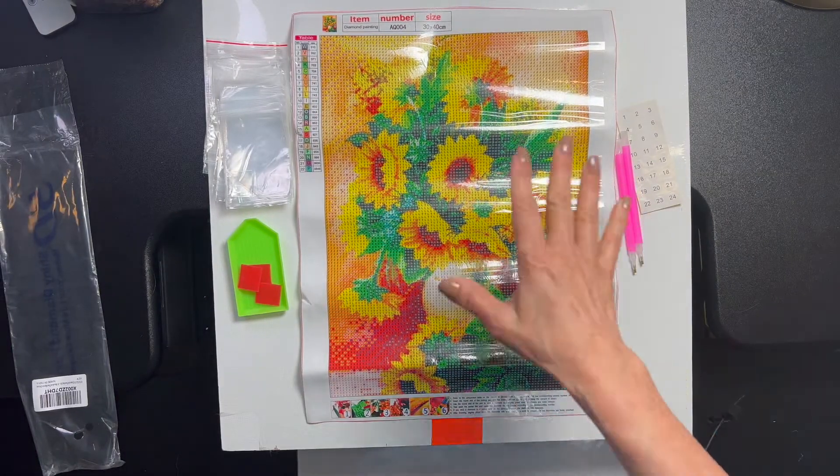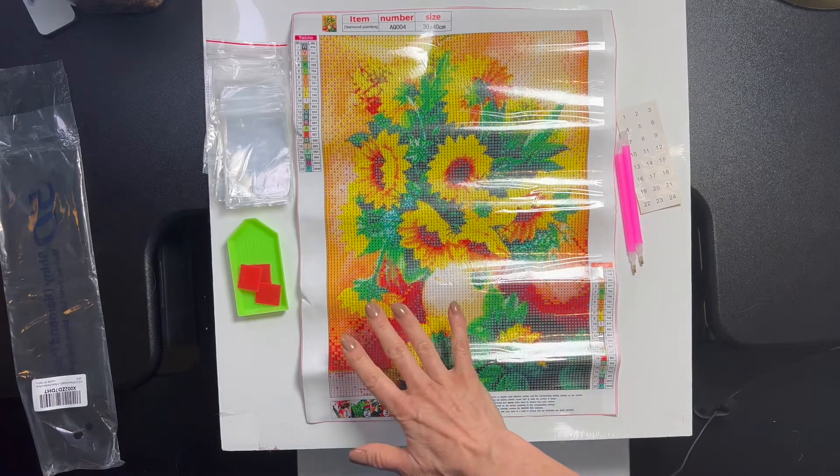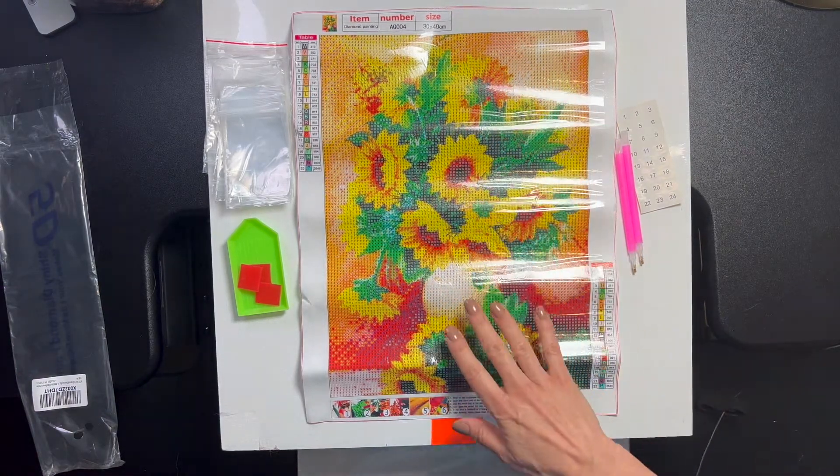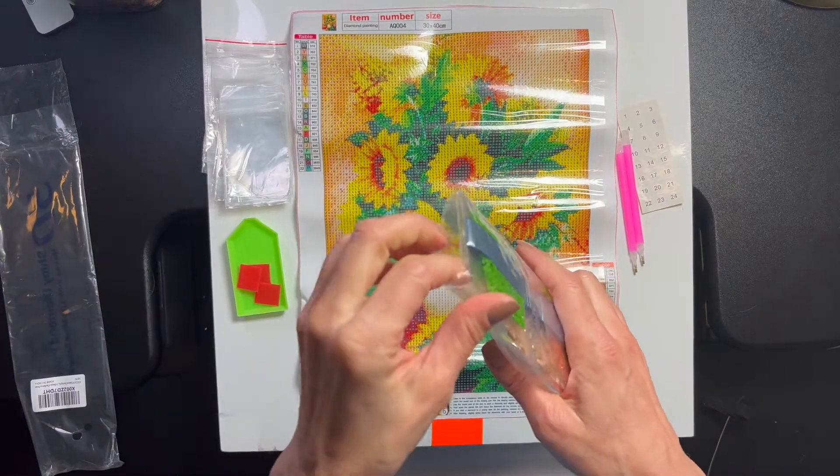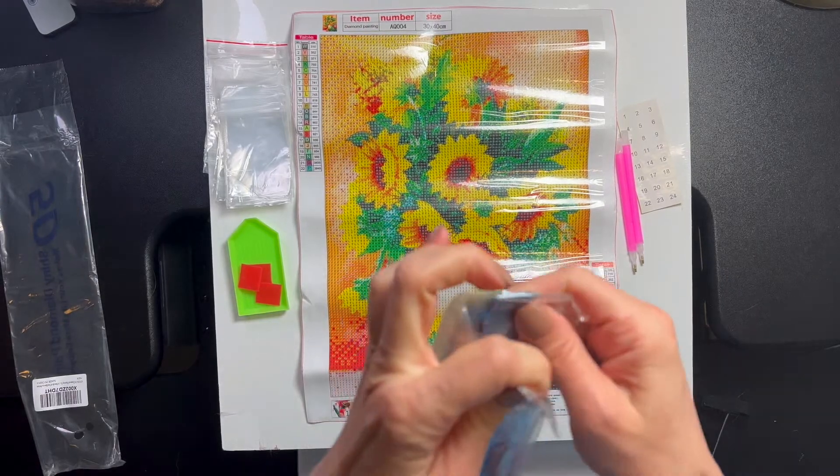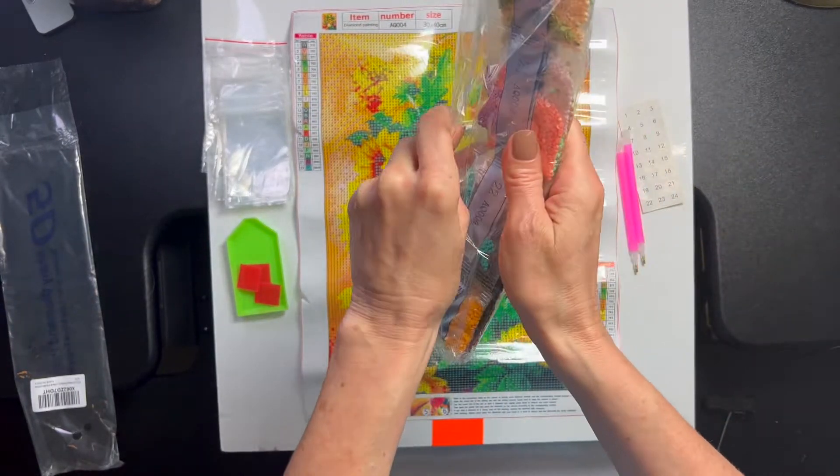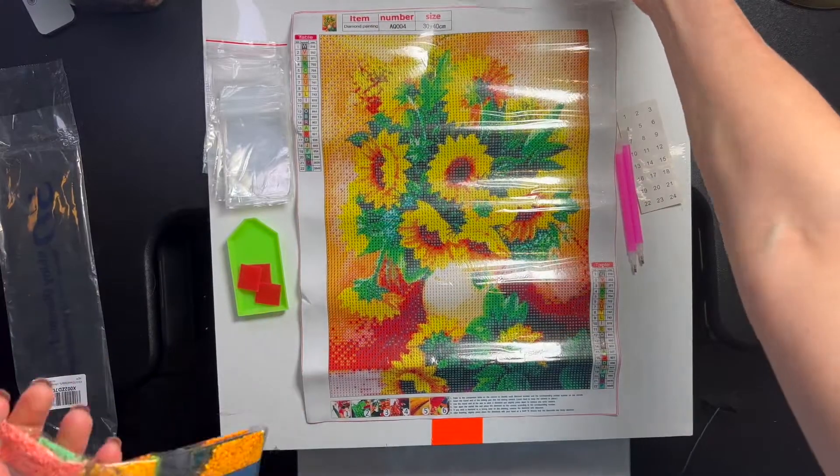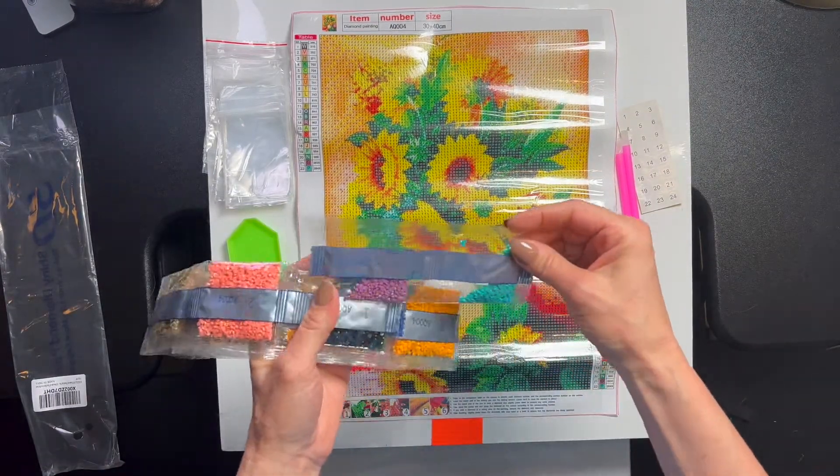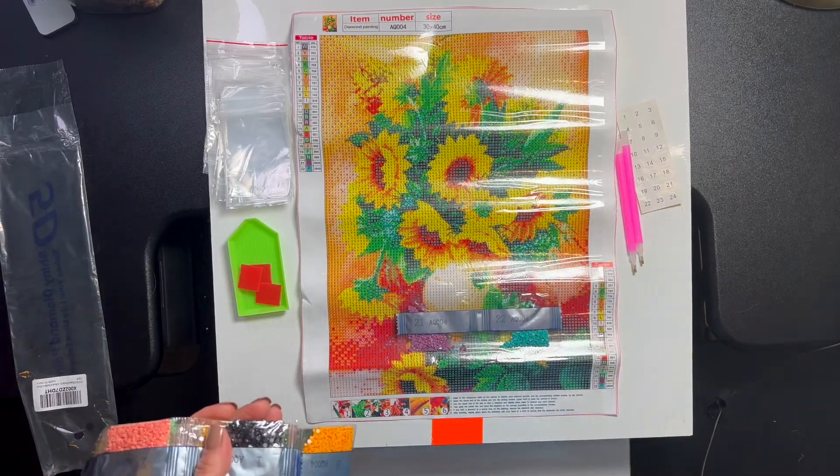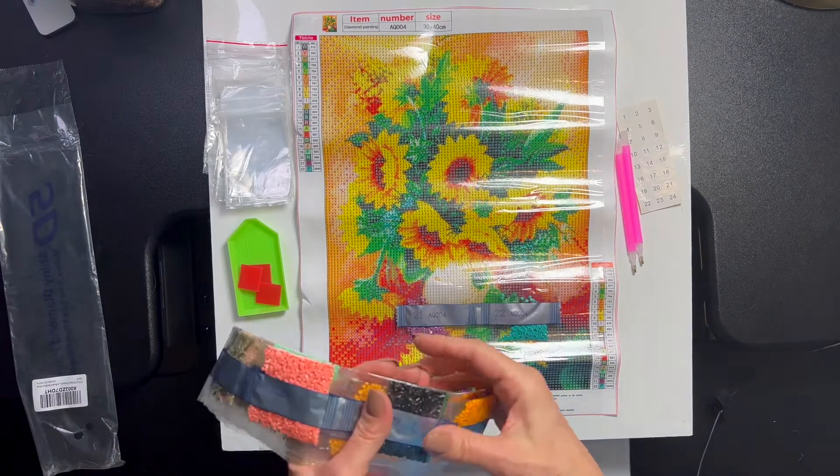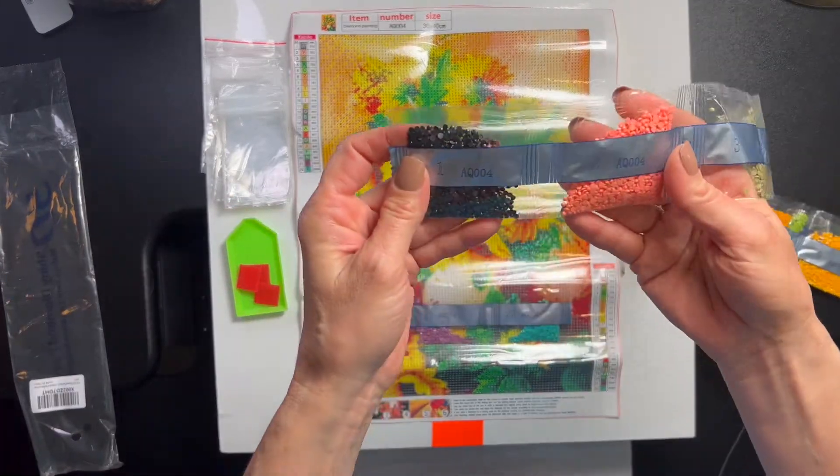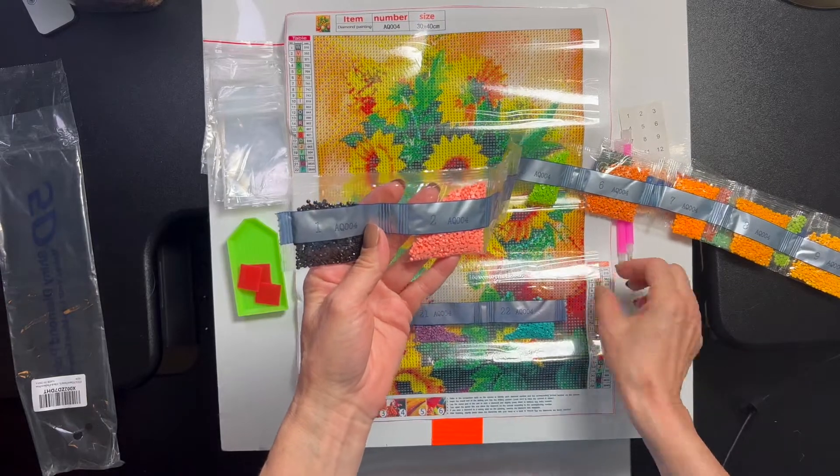Now my idea with this painting is, my concept was I was going to do all of the sunflowers and the green, and then I might do the background differently. But we'll make a decision about that. So the colors are in number order, which is very nice.